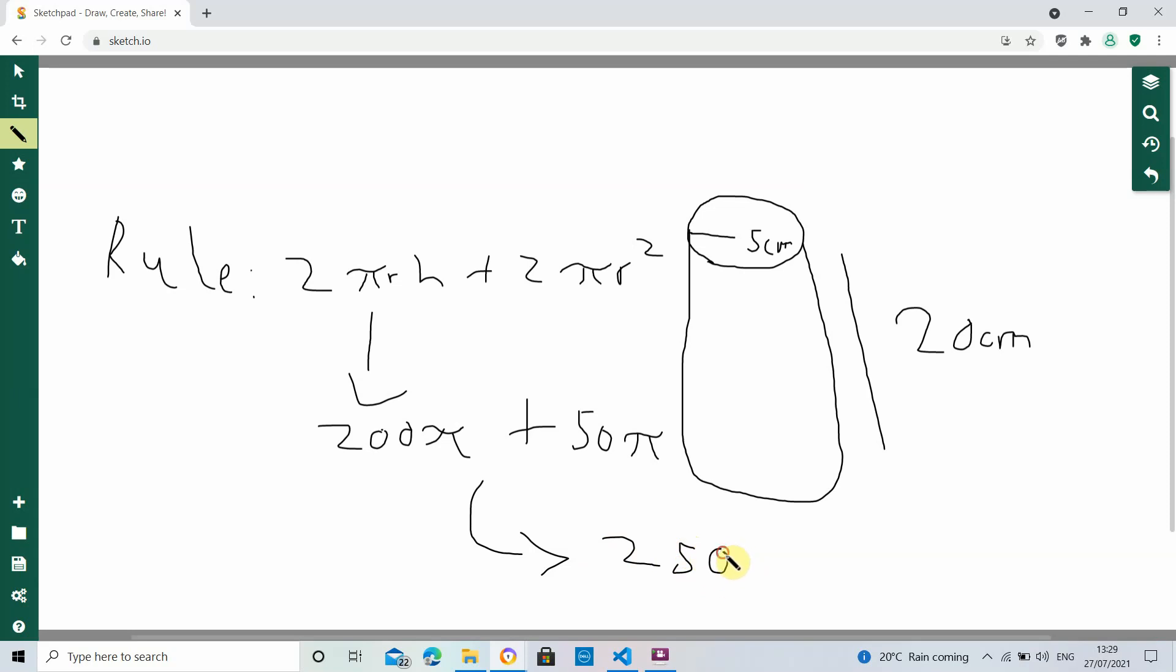And now I'd like you to take out your calculator. So, 250 pi is 785.3981634, but I'll just write that to one decimal place, which is 785.4 centimeters squared.